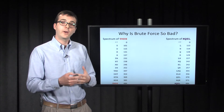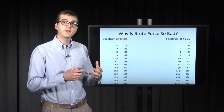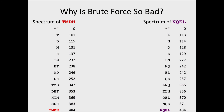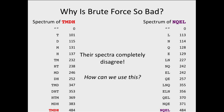The way to do that is to look at the spectra of these two peptides. On the left is the spectrum of TMDH and on the right the spectrum of NQEL. They completely disagree — they agree at zero and they agree at 484, but nowhere in between do they share the same masses. We want to use this to our advantage to design an algorithm that eliminates TMDH based on its spectrum.